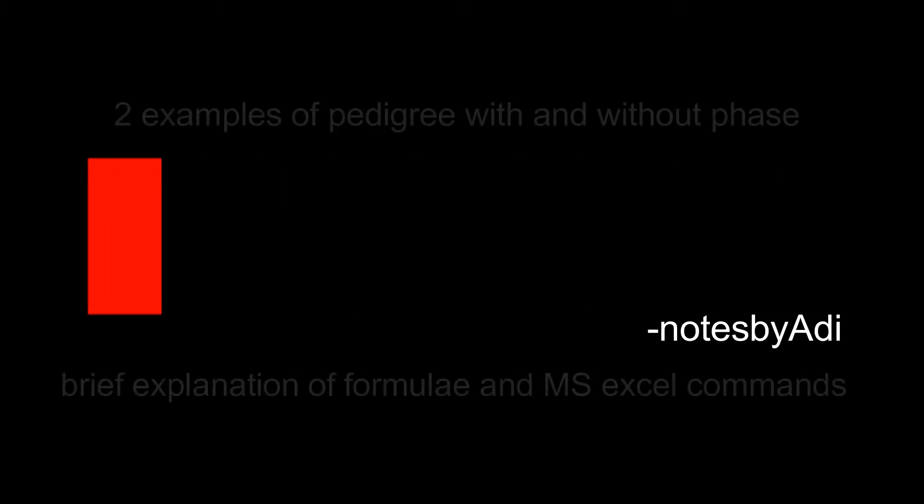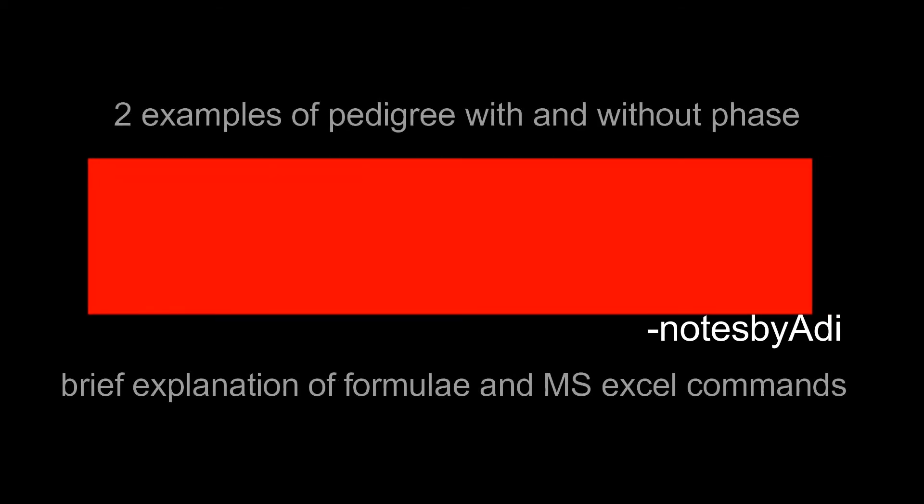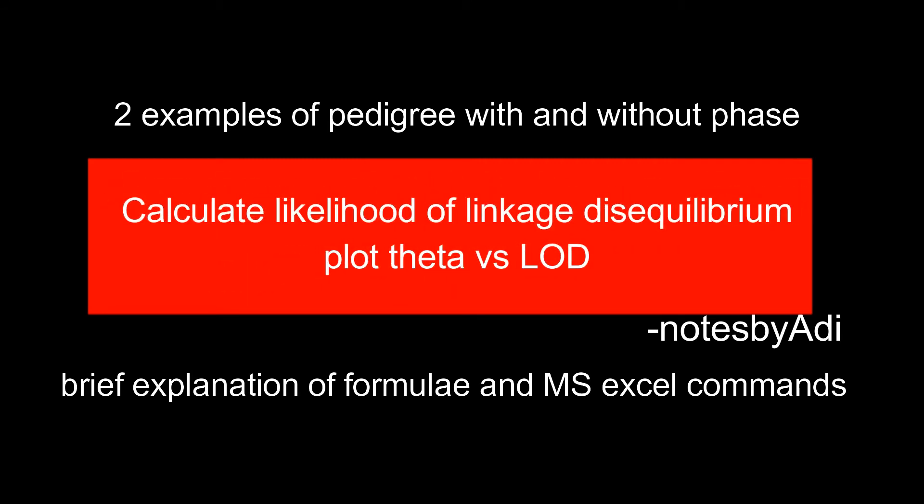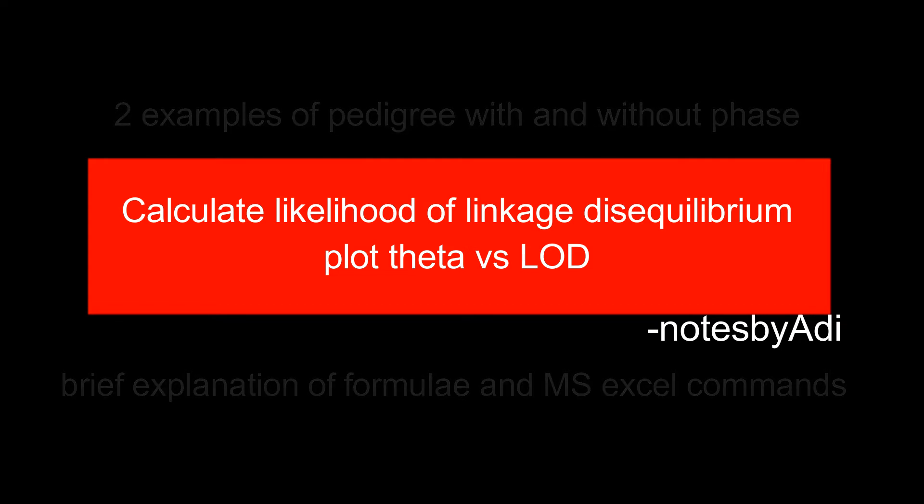Hi guys, welcome to another video. In this video we'll cover how to calculate the different LOD scores and the recombination fraction theta for a given pedigree. A basic introduction to what linkage disequilibrium is: it is basically the non-random association of alleles from different loci.